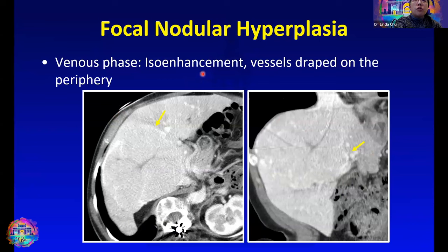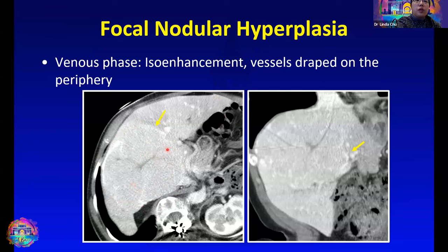With focal nodular hyperplasia, because it typically becomes isodense to the background liver on the venous phase, if venous phase images are all you have, you can actually easily walk by the lesion. This is a fairly sizable mass in the right hepatic lobe, and if you're scrolling quickly, you can easily miss it because it's really isodense relative to the background liver. We can appreciate a central scar and also displacement of vessels around the periphery. When vessels are peripherally and gently pushed and draped on the periphery, that is a more benign feature, as opposed to something rapidly growing, which would invade the vessels rather than gently pushing them away.